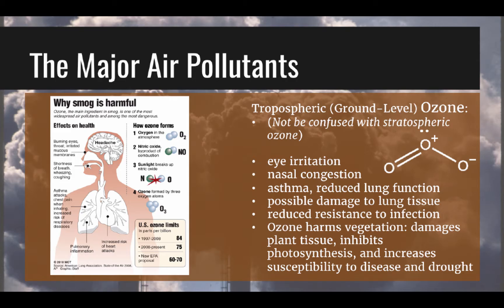Tropospheric ozone is formed when nitrogen oxides and volatile organic compounds react in the presence of sunlight. Ozone is the main component of smog, and since ozone is a byproduct of pollutants combining, the strategy for decreasing ozone is usually targeting nitrogen oxides. Ozone has distinct effects on human health, including eye irritation, nasal congestion, asthma, reduced lung function, possible damage to lung tissue, and reduced resistance to infection. Ozone also influences ecosystems negatively, causing damage to plant tissues, inhibition of photosynthesis, and increased susceptibility to plant disease and drought.